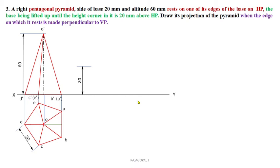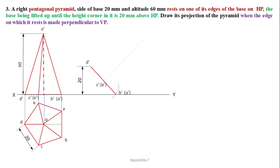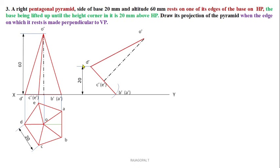On the extension line, fix a point 20mm above HP. From this point draw an arc. Measure the distance of D-dash and A-dash from the base, then cut an arc on the XY reference line. Join that extension line point to the arc on XY. The base is now completed. You can also label all the base edges of the pentagonal surface and mark the midpoint for the axis.